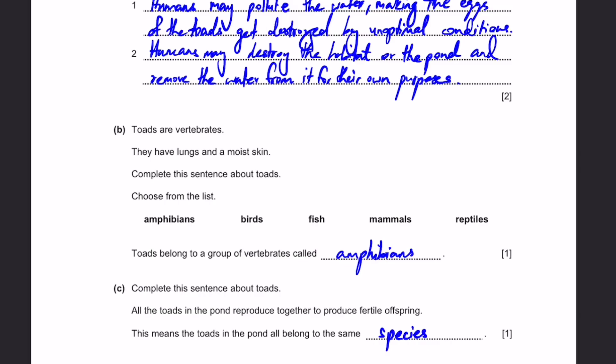Toads are vertebrates. They have lungs and a moist skin. Complete the sentence about toads. Choose from the list. Amphibians, birds, fish, mammals, reptiles. Toads belong to a group of vertebrates called amphibians. That's the answer. Complete the sentence about toads. All the toads in the pond reproduce together to produce fertile offspring. This means the toads in the pond all belong to the same species. That's the answer.